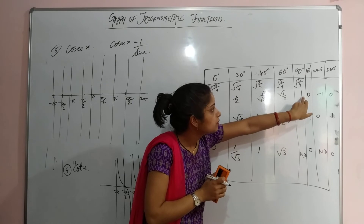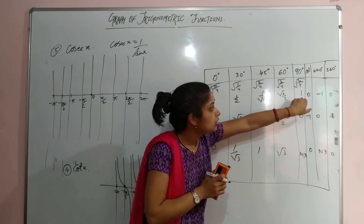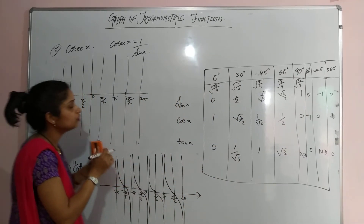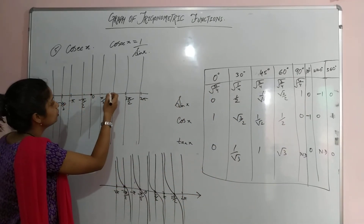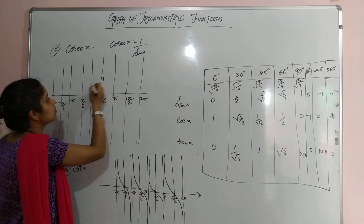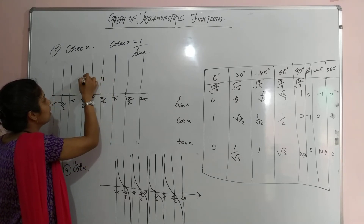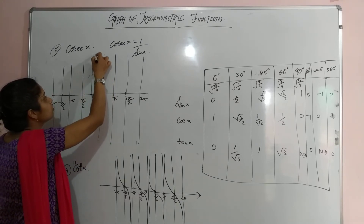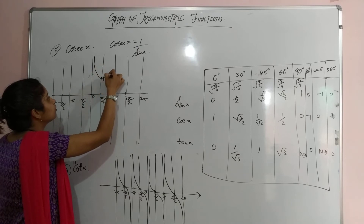At π/2, sin is 1, so cosec is also 1. So the graph touches 1 at π/2.